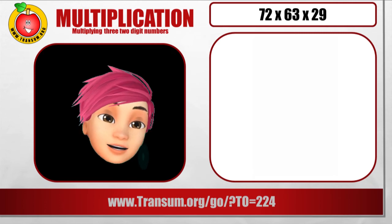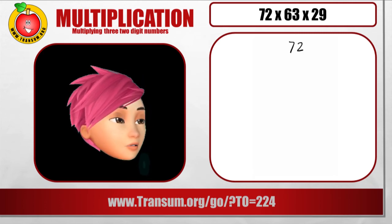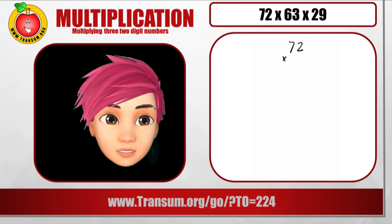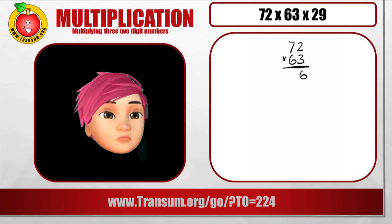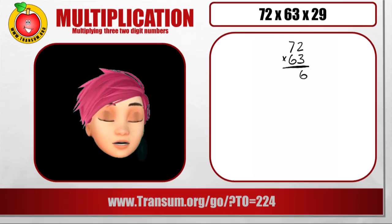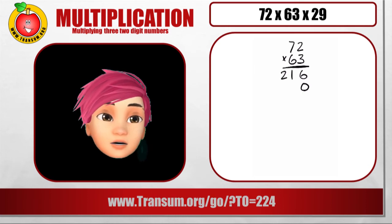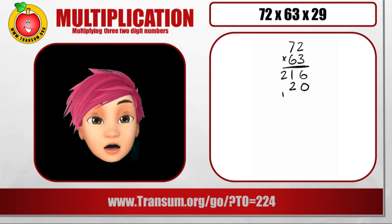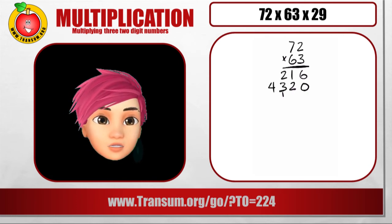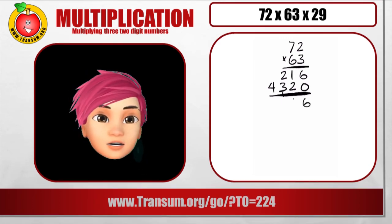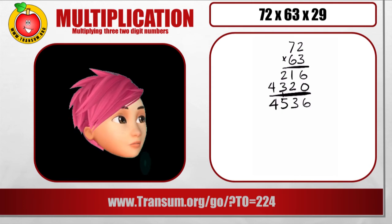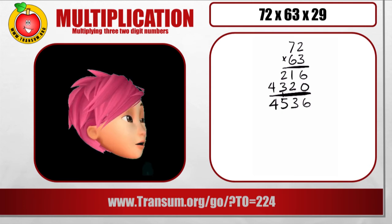Finally let's look at this calculation where we have 3 2 digit numbers that we need to multiply together. Well the trick is to multiply the first 2 together first. And then when we have an answer, a product from those 2 numbers multiplied together. We can multiply that product by the 3rd 2 digit number. So here we go. We're just getting the answer for the first multiplication. 4,536.